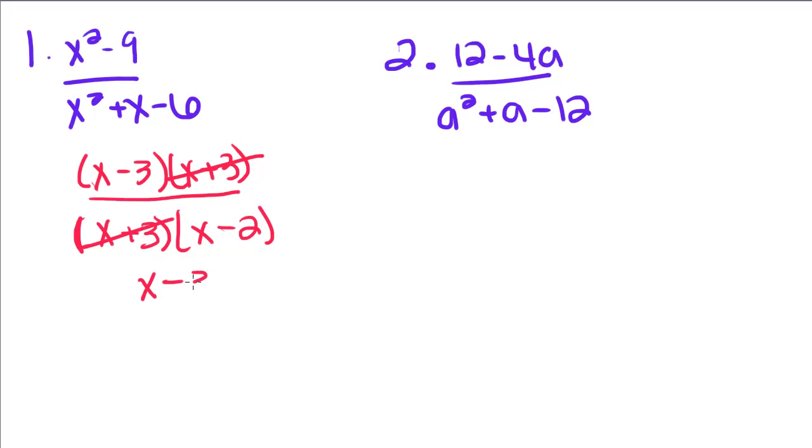We're just left with x minus 3 over x minus 2. What we're essentially doing here is dividing by those common factors. This is the only way for us to really divide polynomials.